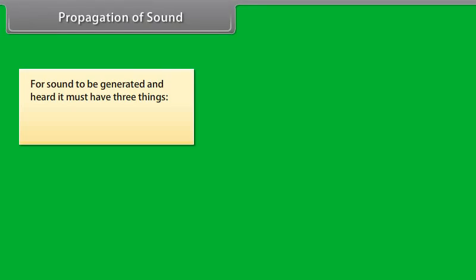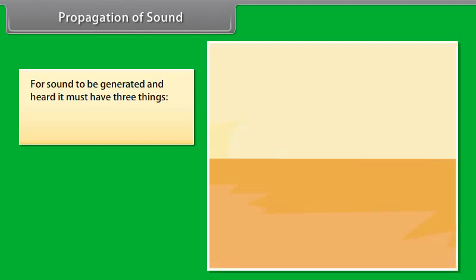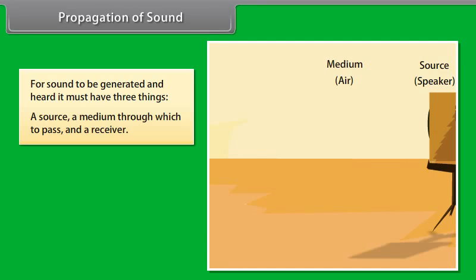Propagation of sound. For sound to be generated and heard, it must have three things: a source, a medium through which to pass, and a receiver. Let us assume the source is the speaker's voice, the medium through which it is transmitted is air, and the receiver is the listener's ear.